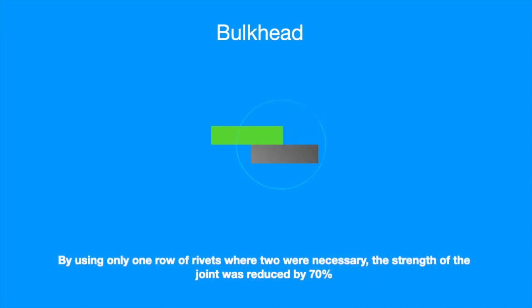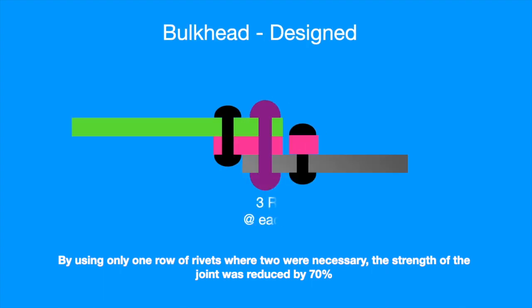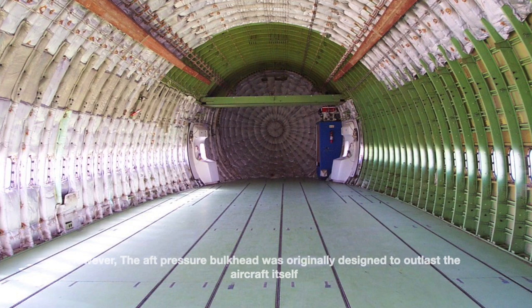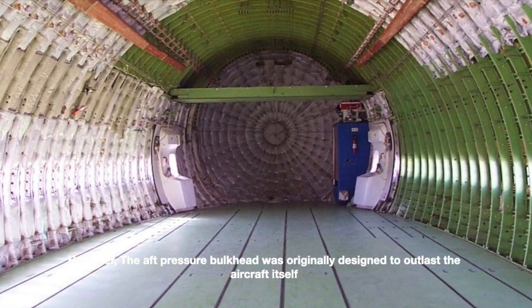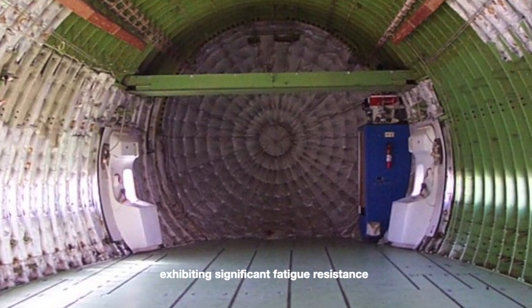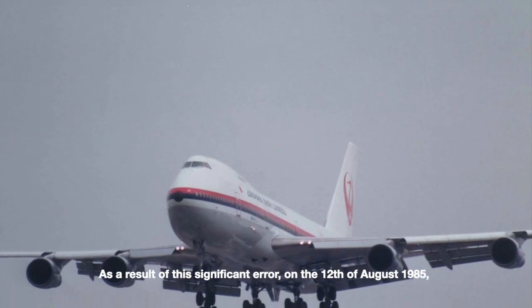By using only one row of rivets where two were necessary, the strength of the joint was reduced by 70%. However, the air pressure bulkhead was originally designed to outlast the aircraft itself, exhibiting significant fatigue resistance.